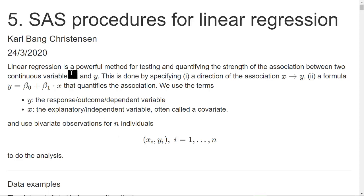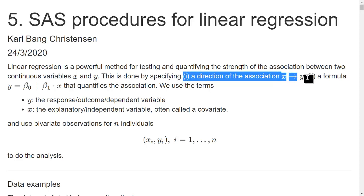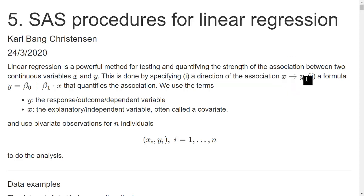This part of the course is about linear regression. Linear regression is a powerful method for testing and quantifying an association between two continuous variables. We think about an example where we have blood pressure and an obesity score. When we analyze this relationship using linear regression, we decide that there's a direction of the association — that one variable x has an impact on the other variable y — and we quantify how much y would change if x changes.